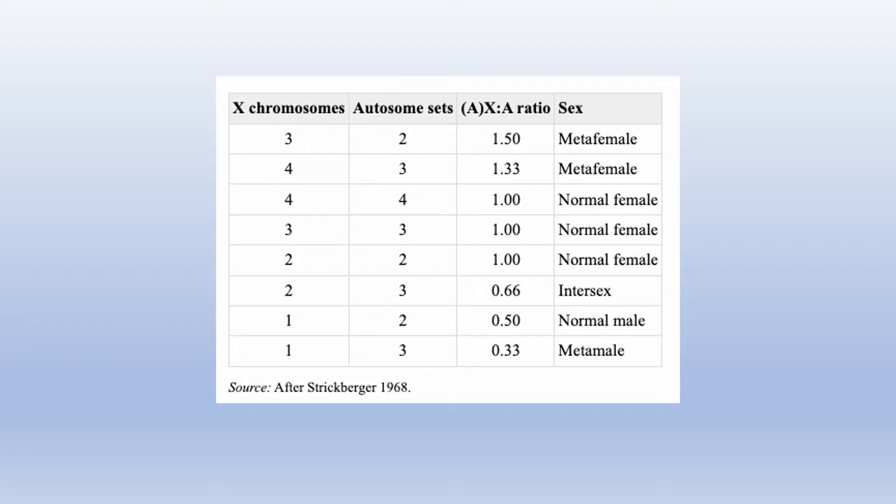First, let's take a look at the ratio. A normal female fruit fly has two X chromosomes and two sets of autosomes, thus her ratio is one. Normal male fruit flies, on the other hand, have one X chromosome and two autosomes with a ratio of 0.5. If the resulting ratio is less than 0.5, the fly will become a meta male or super male. If the ratio is higher than one, the fly will become a meta or super female.